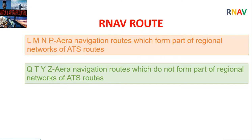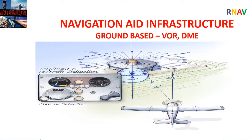Area navigation routes designated Lima, Mike, November, and Papa are part of the regional networks of ATS routes and are the most preferred routes by international airlines. Routes designated Quebec, Tango, Yankee, and Zulu are also area navigation routes but do not form part of the regional networks of ATS routes.